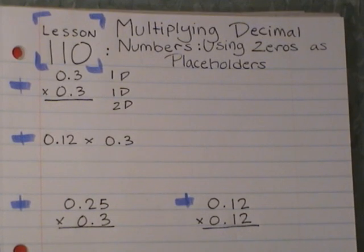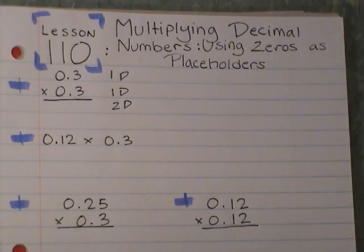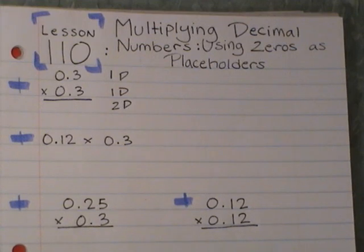When we multiply decimal numbers, we follow the rule: multiply the numbers, and then count how many places there are behind the decimal point, and then add that to our answer. So what we're going to do now is when we count how many places we need to move, but we run out of digits, and I'll show you what I mean by that.